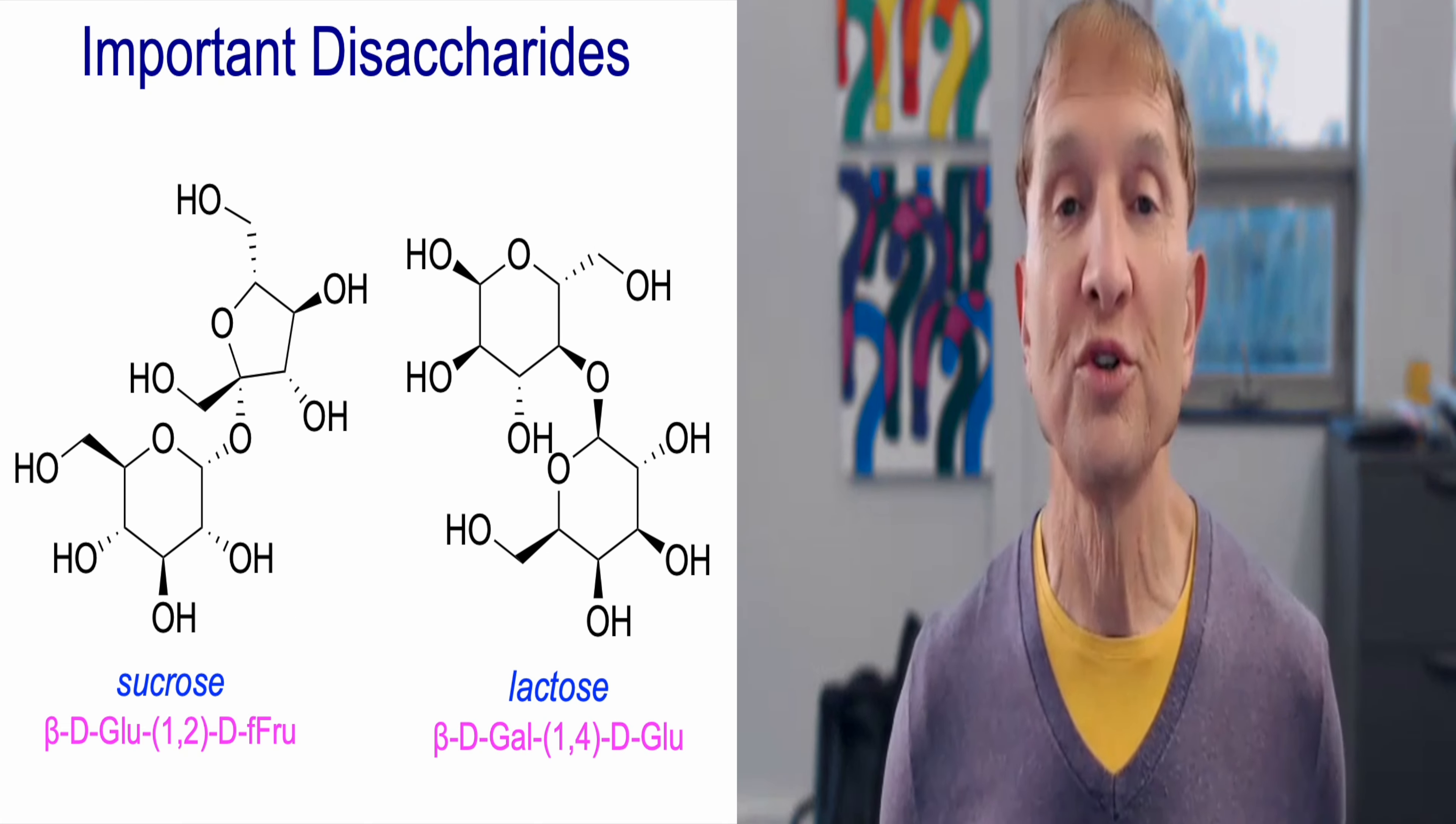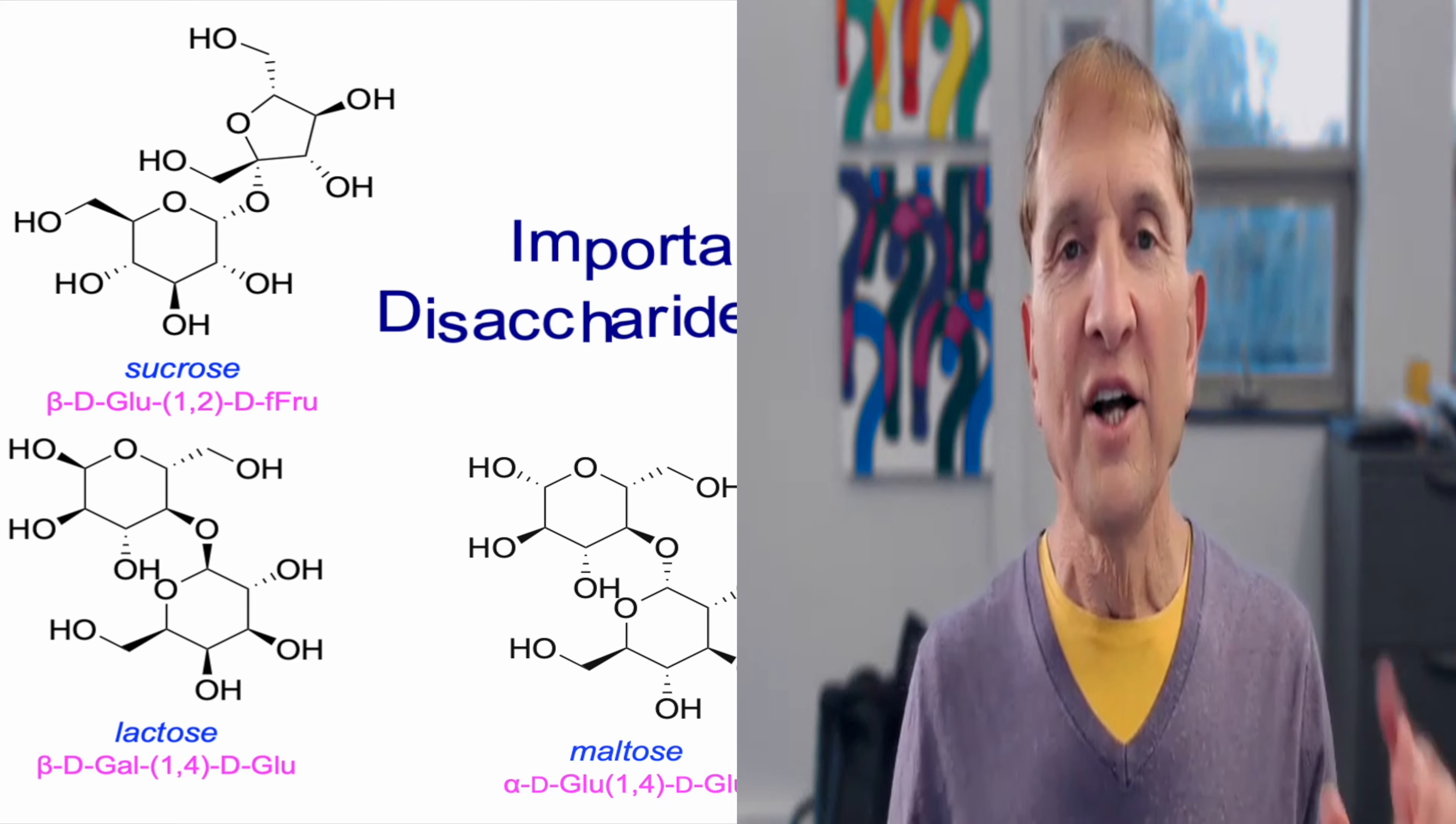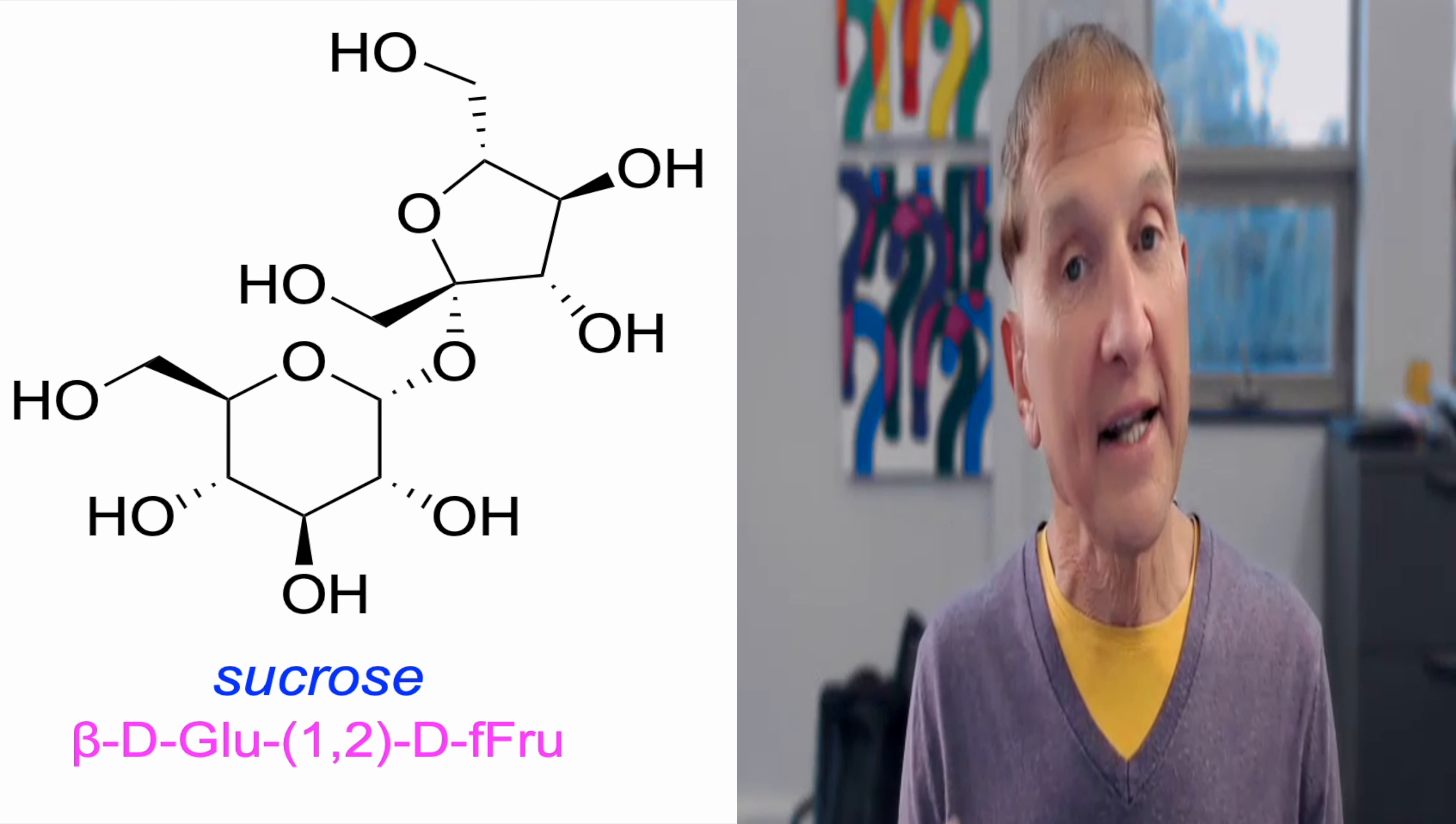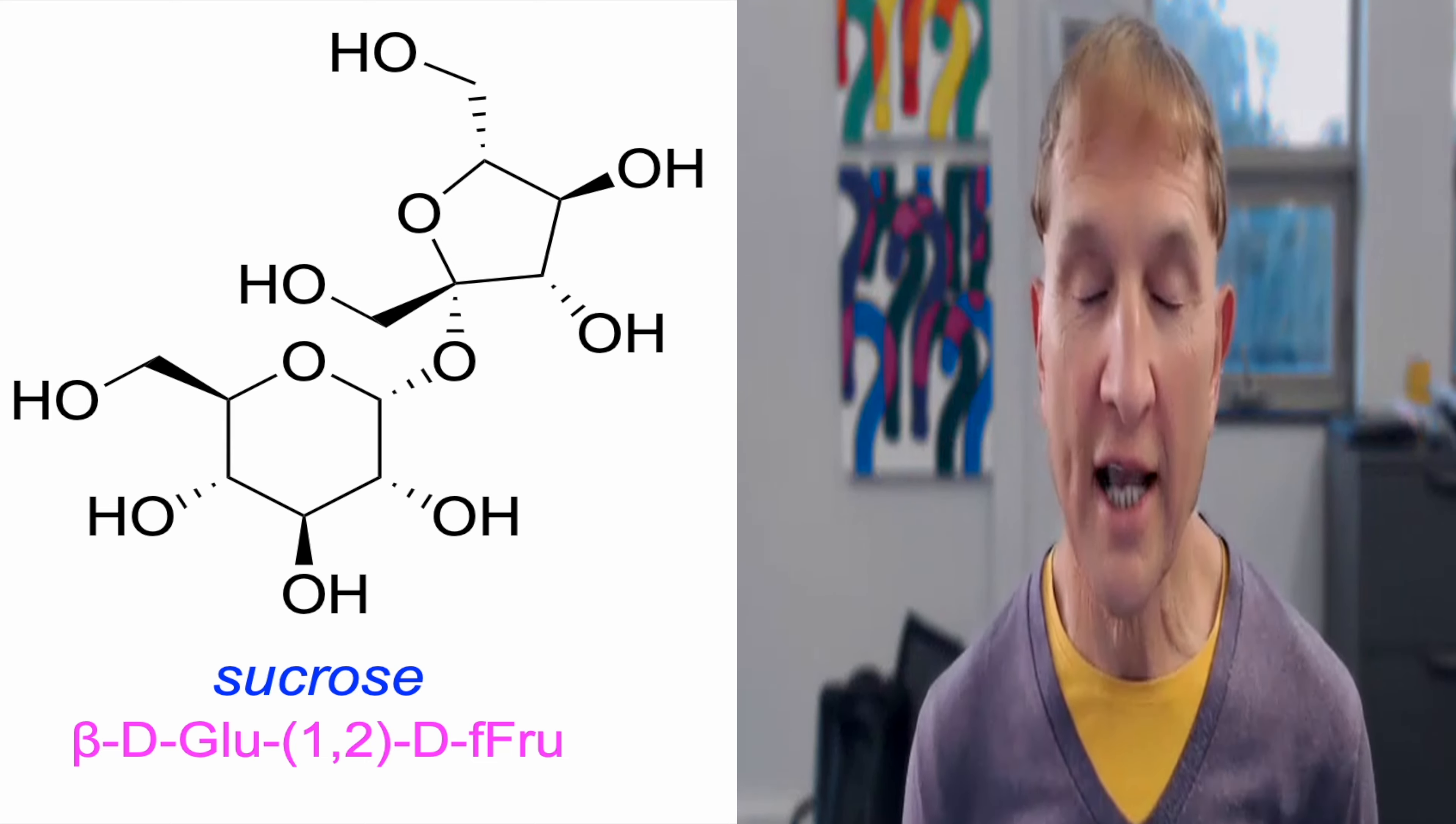The second most important disaccharide is lactose. And the third most important disaccharide is maltose. But by a distance, second and third to sucrose. Sucrose, sugar, is particularly bad for your teeth, because that uniquely is hydrolyzed by an enzyme in bacteria. And that bacteria produces a sticky polysaccharide that glues to the enamel. And the bacteria can live there and begin tooth decay.